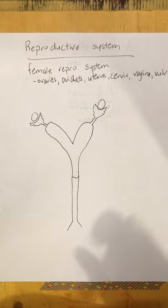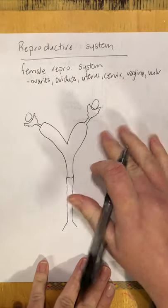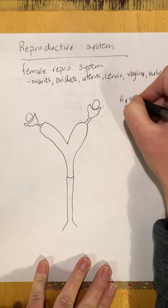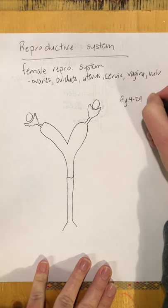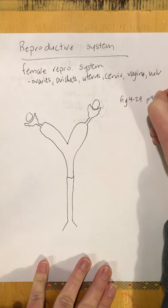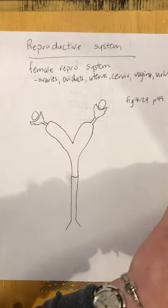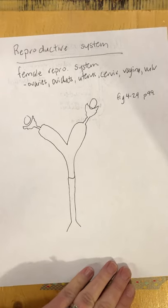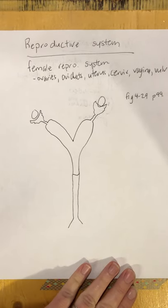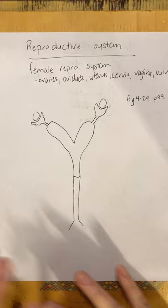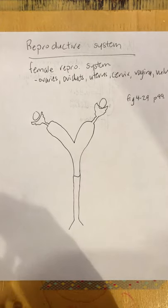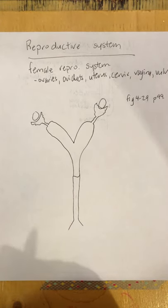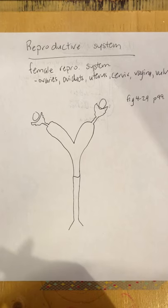I've got a little hand-drawn drawing here — you can also refer to figure 4-29 on page 99 in your Elsevier textbook. I'm going to use this diagram to tell you the story of how reproduction happens in the female reproductive system.